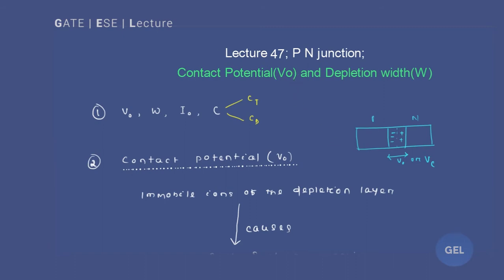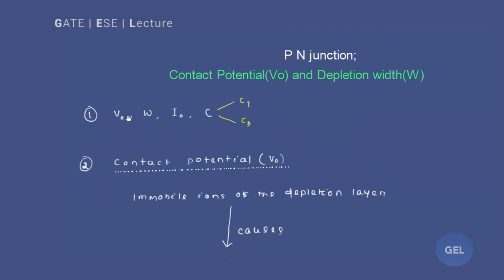Hi, welcome to JIA Gate ESC lecture. We are in lecture number 47 of EDC. This is the second module, that is PN junction, and we are going to study about the concept of contact potential and depletion width.